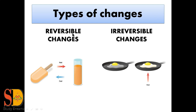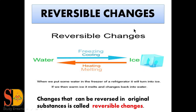Let us discuss in detail. First we have reversible change. The change that can be reversed to get back the original substance is called reversible change. When we put some water in the freezer of a refrigerator, it will turn into ice. When we heat this ice, it starts melting and changes back into water. So this is a reversible change — we get our original substance back.